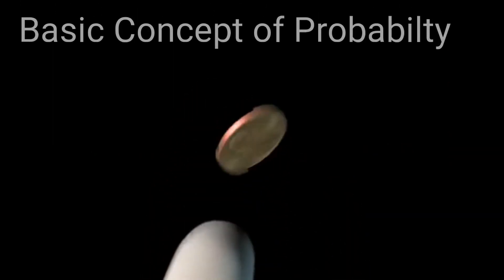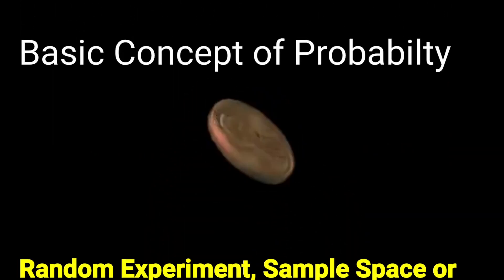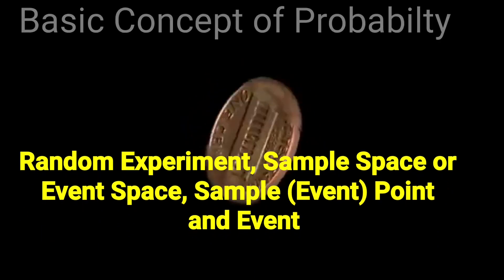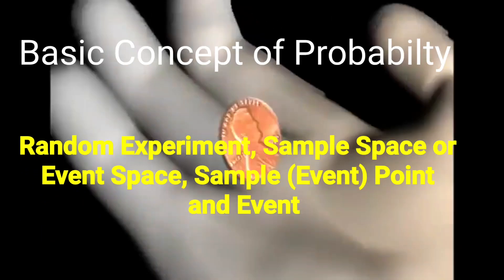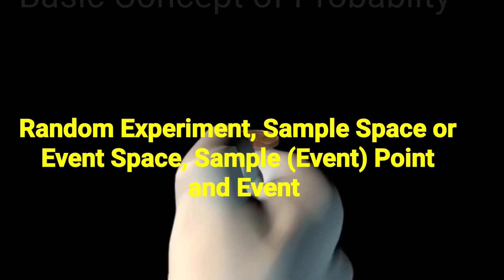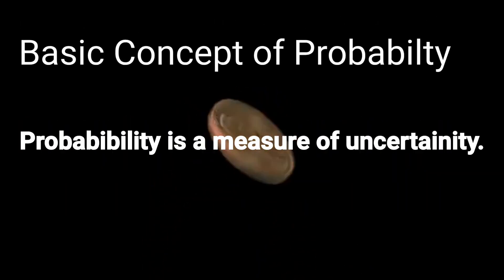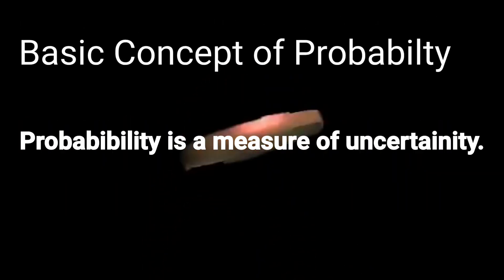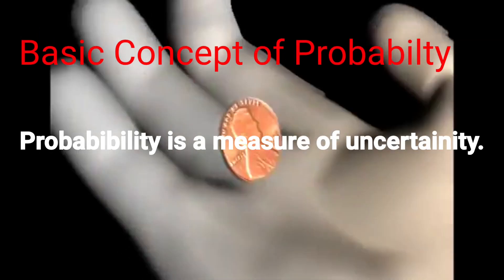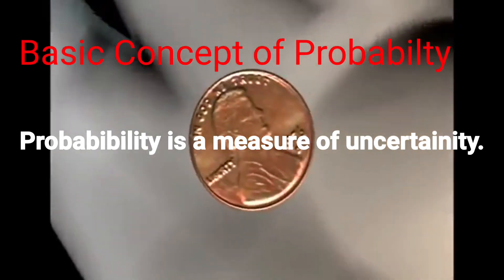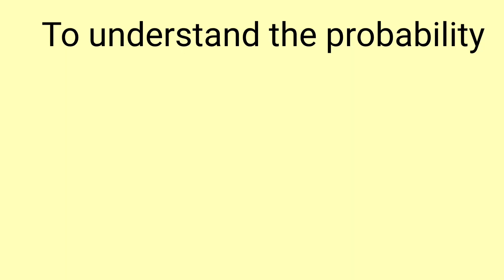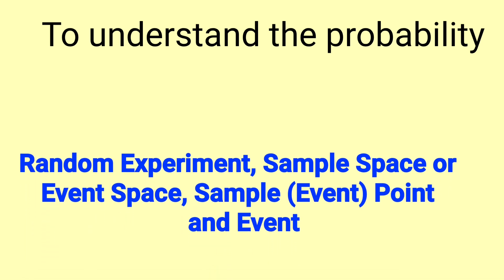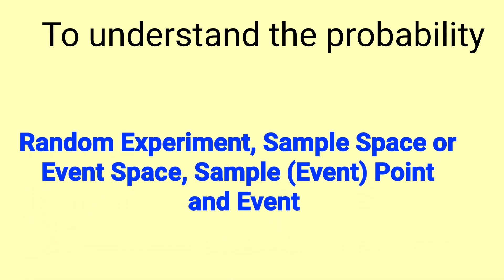Every day we use probability to plan around the weather. Look up at the sky — will it rain today? So probability is a measure of uncertainty. To understand probability we must know about a few basic terms, namely random experiment, sample space or event space, and events.